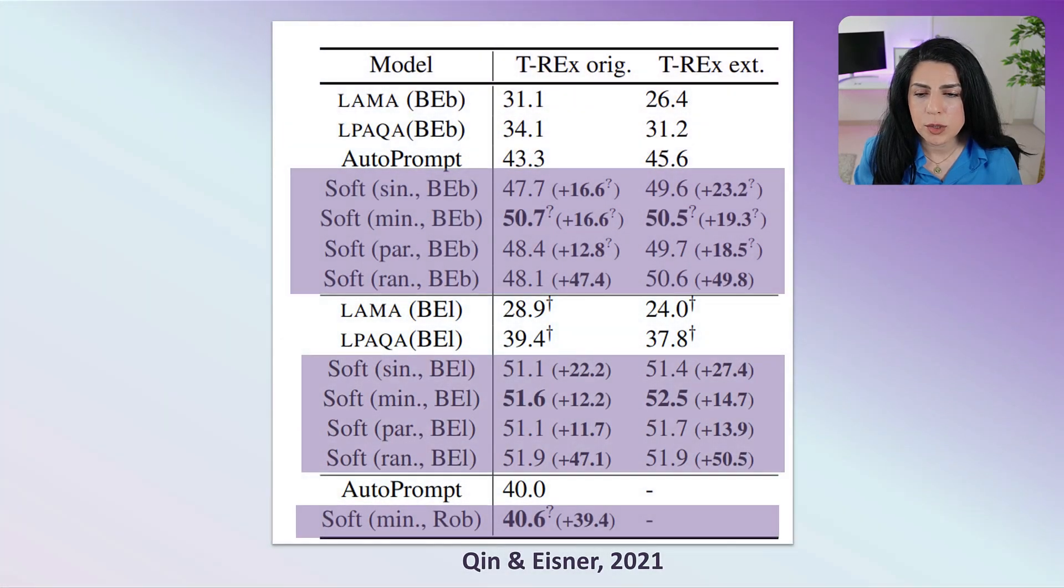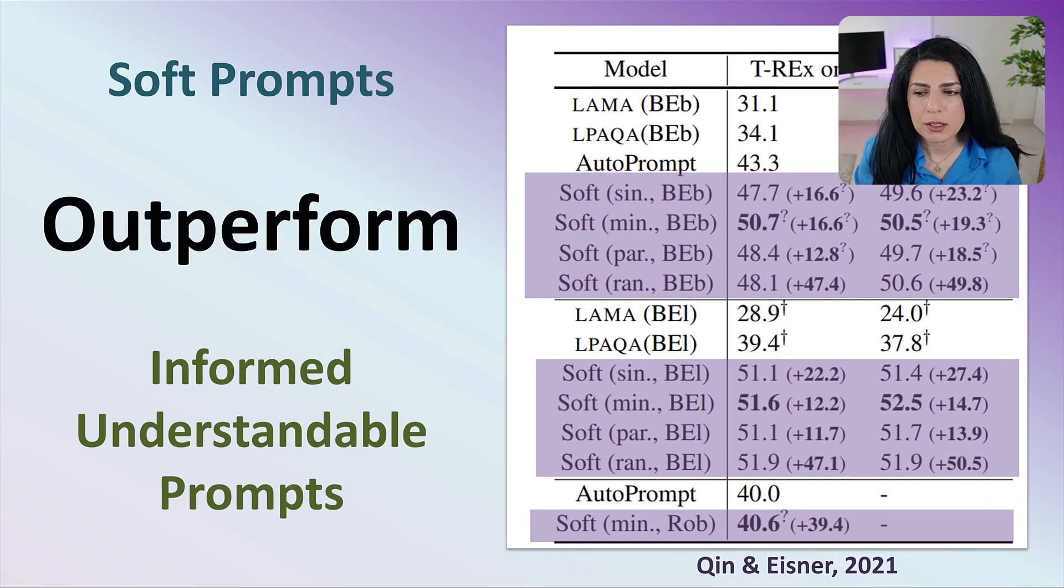The research shows that these soft prompts are basically better than informed, understandable prompts. But how is it possible that these completely random texts are better than the language you know, the understandable English that we will talk about?